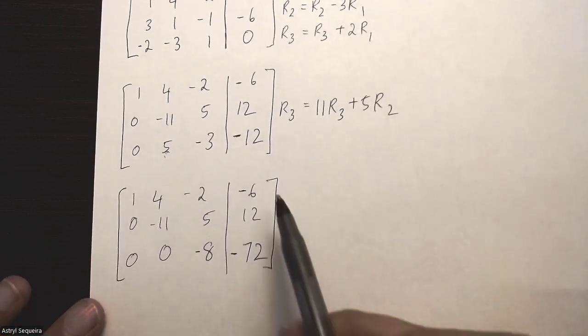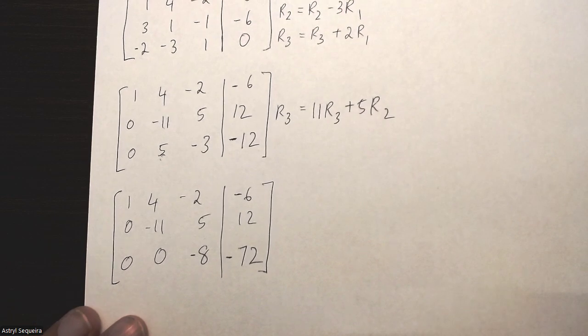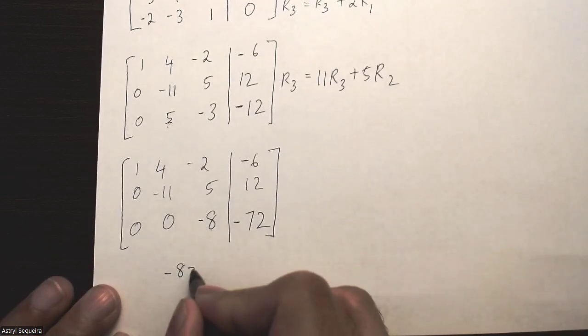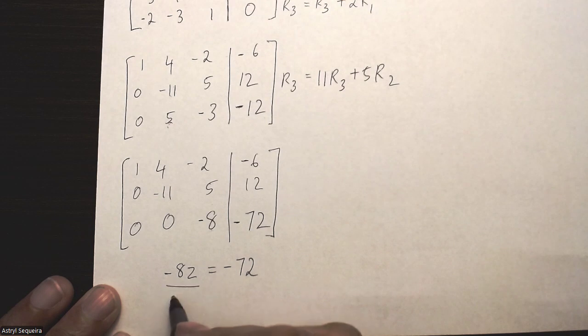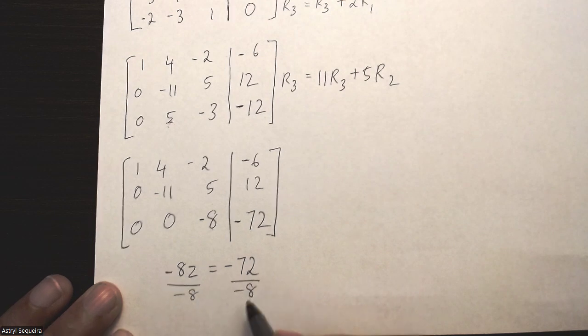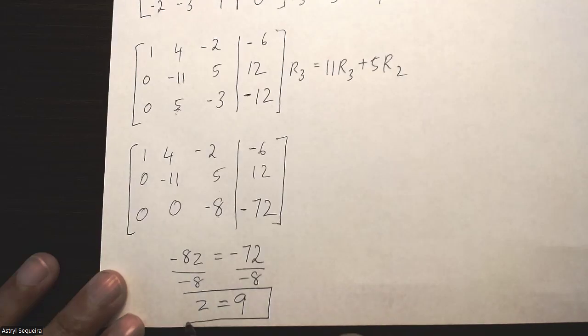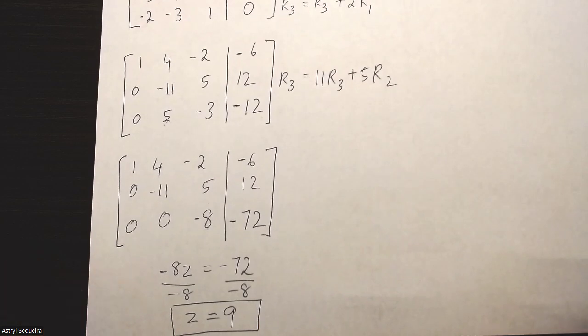So now I'm just going to use this to solve my matrices using equations. I'm not really too bothered with getting into reduced row echelon form. So if I look at the last one over here, negative 8z equals negative 72. Divided by negative 8 on both sides means that z equals 9. By the way, it already looks like we're going to get a unique solution here, which means we're going to probably have a point of intersection in this question.